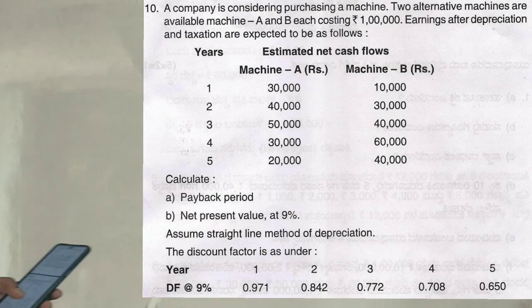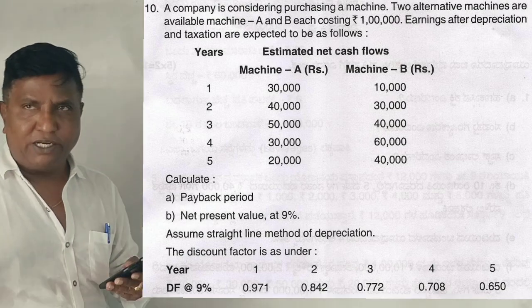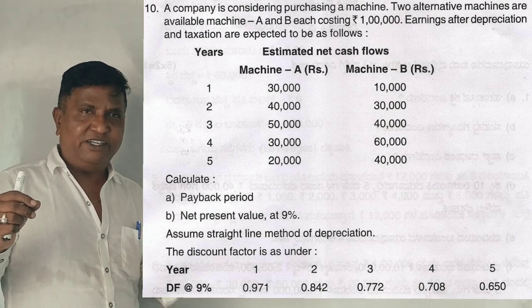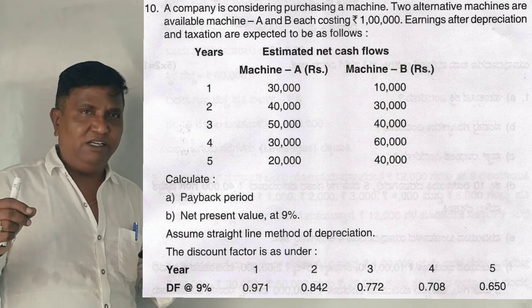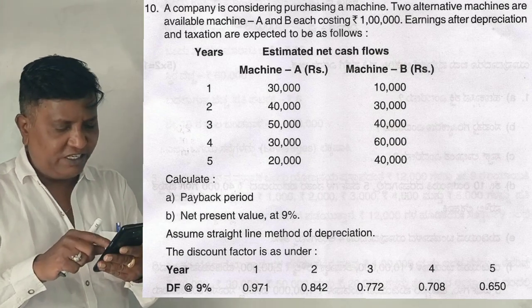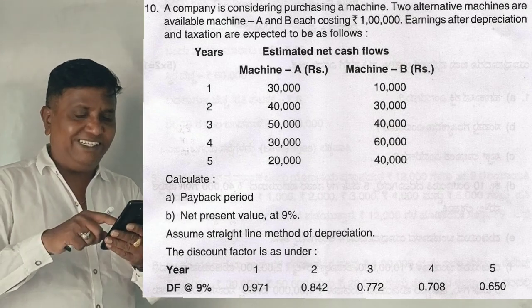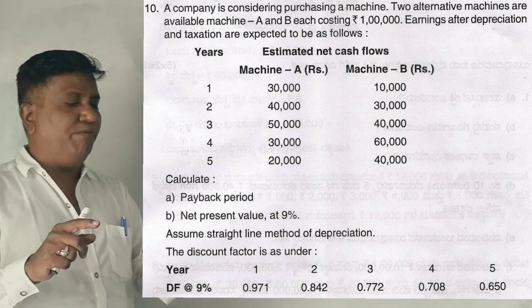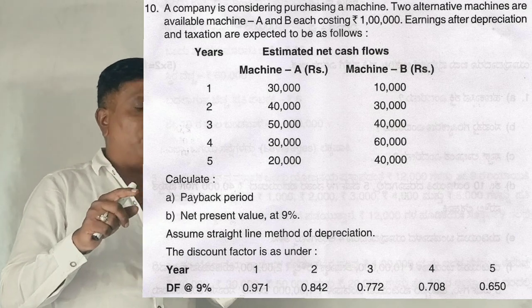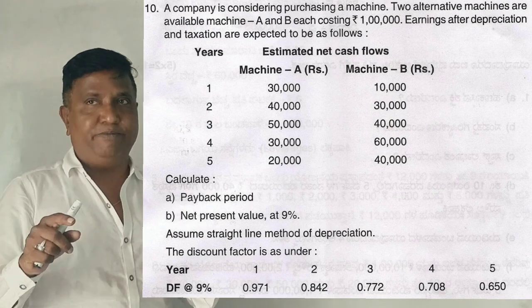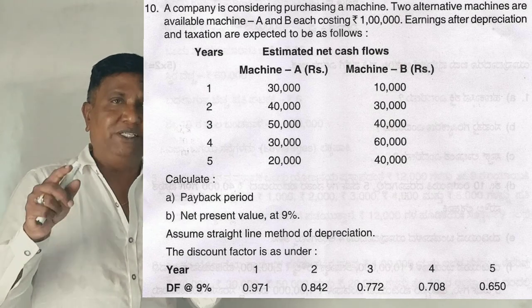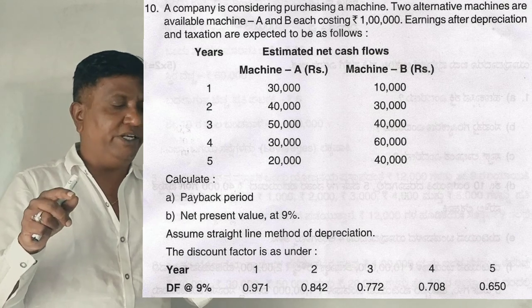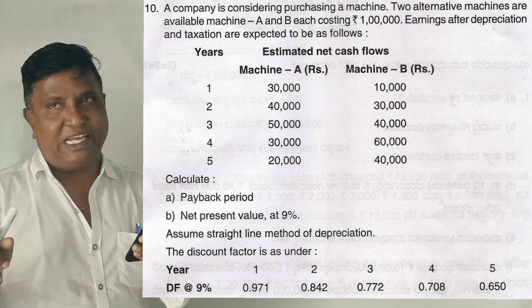Guys, this is 2018 Question Paper, Financial Management for Bangalore University for 14 marks. A company is considering purchasing a machine. The two alternative machines available, machine A and B, each costing 1 lakh.